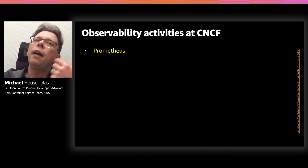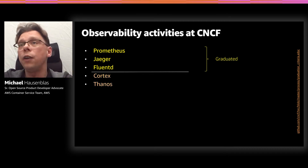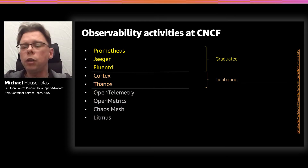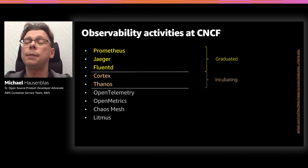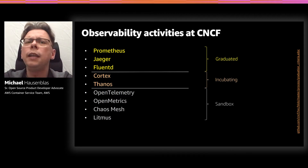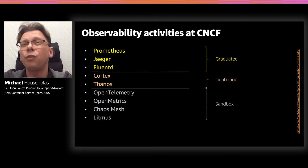Looking more closely, we have Prometheus, Jaeger, and FluentD as graduated projects. We have Cortex and Thanos that are incubating. And we have OpenTelemetry, OpenMetrics, ChaosMesh, and Litmus at the sandbox level. Typically, when someone wants to share their project with CNCF they come in at sandbox level, and over time, as they demonstrate uptake and community support, the project stabilizes and graduates. There's also the SIG Observability — I'm part of that — where we do due diligence and coordinate efforts among these projects.